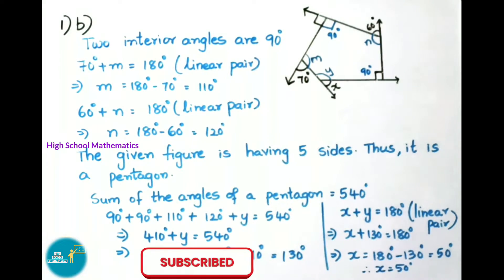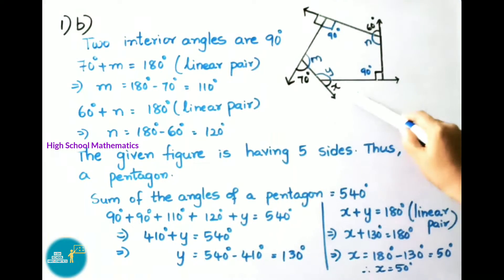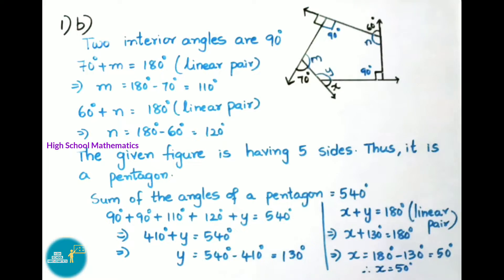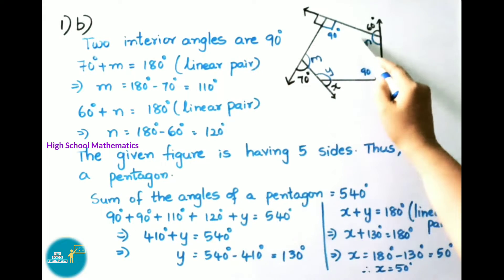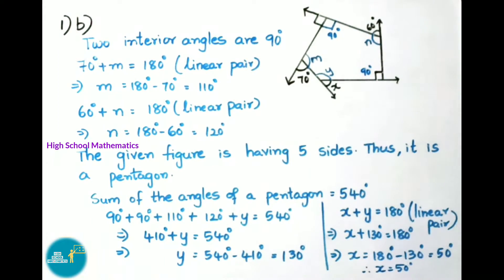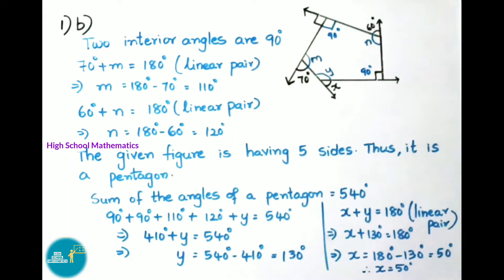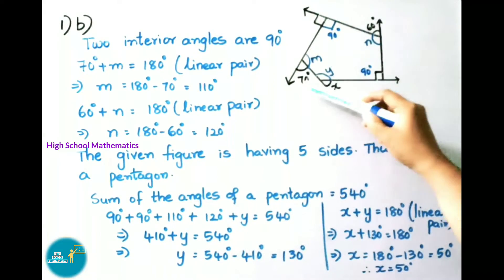See now question 1B. In the given figure, the exterior angles are 60 degrees, 70 degrees, and x. Two of the angles are right angles. Since it is a right angle, the interior angle is also 90 degrees, because the linear pair is 180 degrees and 180 minus 90 equals 90. So two interior angles are both 90 degrees.